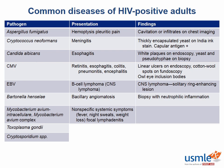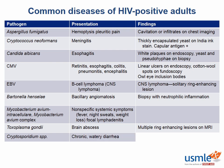Toxoplasma gondii is a protozoa that loves the central nervous system. It is found in uncooked meats and in AIDS will present as multiple brain abscesses with ring-enhancing lesions on MRI. Cryptosporidium is another protozoa that loves the gastrointestinal tract in AIDS patients, causing a chronic, watery diarrhea. In immunocompetent people, the diarrhea is mild and self-limiting, but in AIDS patients with CD4 counts less than 100 it is chronic and severe. It is diagnosed by seeing acid-fast oocysts in the stool.